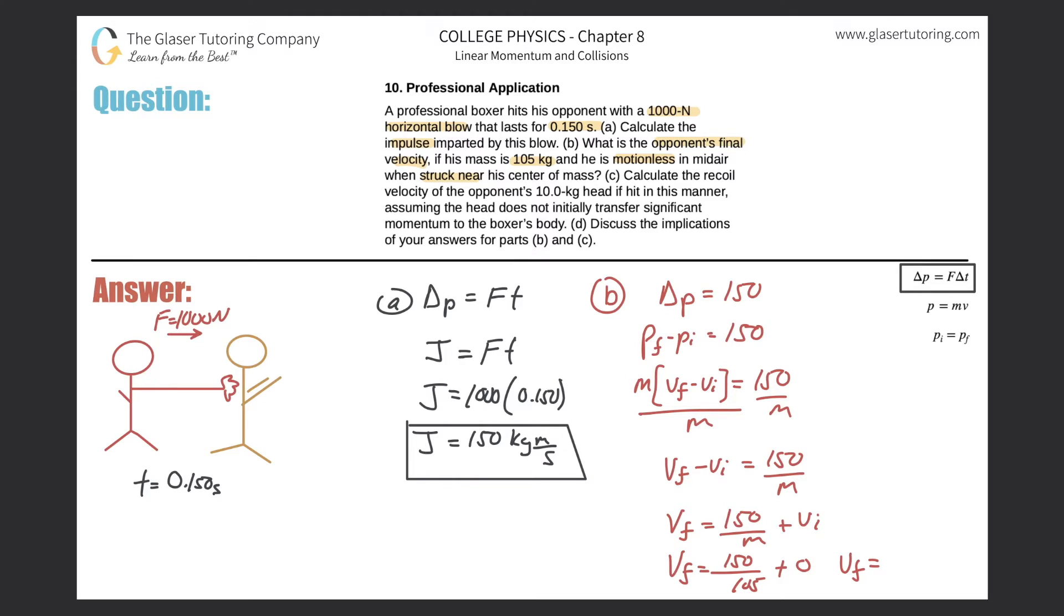1.43 meters per second. Great! That's his final velocity when struck near the center of his mass. So let's take a look now at letter C.